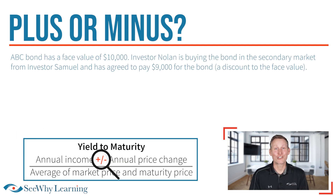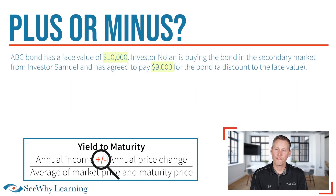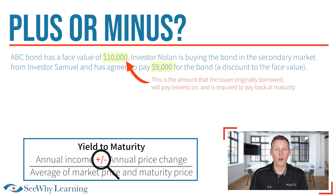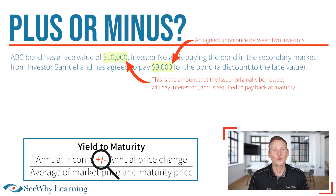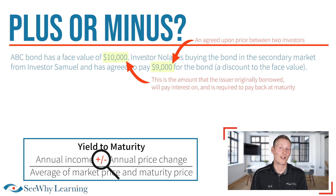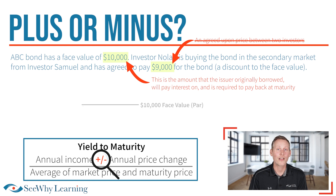I want to draw your attention to the face value and the market value provided in the question you see here. The face value, also referred to as PAR, is $10,000. This is the amount that the issuer originally borrowed, will pay interest on, and is required to pay back at maturity. The market value is simply an agreed upon price between two investors — the price at which one investor who owns the bond sells it to another. From the issuer's standpoint, the market value of the bond is basically irrelevant. The issuer is just going to repay the face value at maturity, and that's the key.